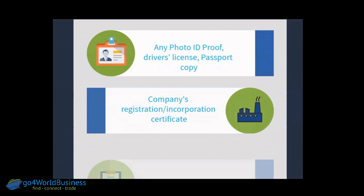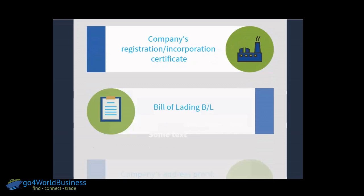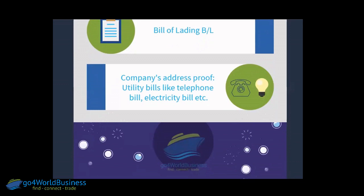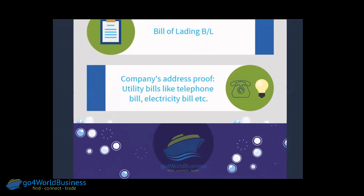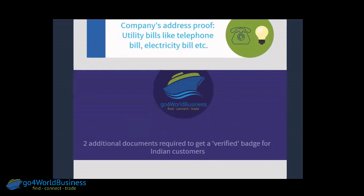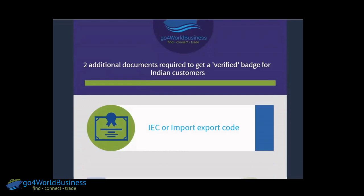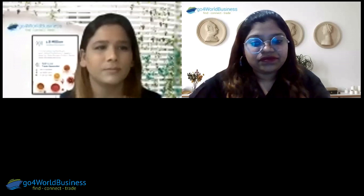The company's registration or incorporation certificate is required, along with a bill of lading, which provides proof of previous sales records — if you have transported, imported, or exported any shipments. The company's address proof, like utility bills such as telephone bills or electricity bills, shows that your company has been established for some time. Apart from that, there are two additional documents for Indian users: the IEC, that is the Import-Export Code, without which you would not be able to be in the trading business, and secondly, the GST certificate.